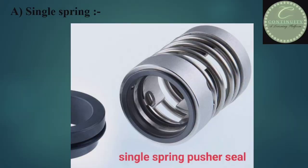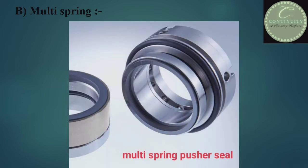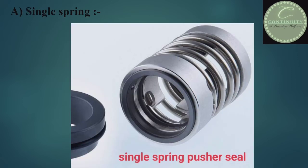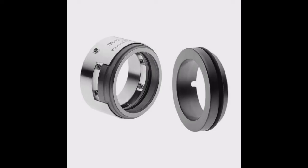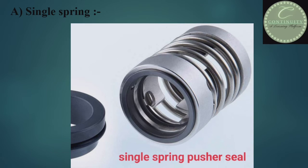There are two types of pusher seal: the single spring seal and the multi-spring seal. If a pusher seal has only one spring, it is called a single spring seal; if it uses multiple springs, it is called a multi-spring seal. Looking at this figure, this is a single spring seal because there is only one spring in the seal.